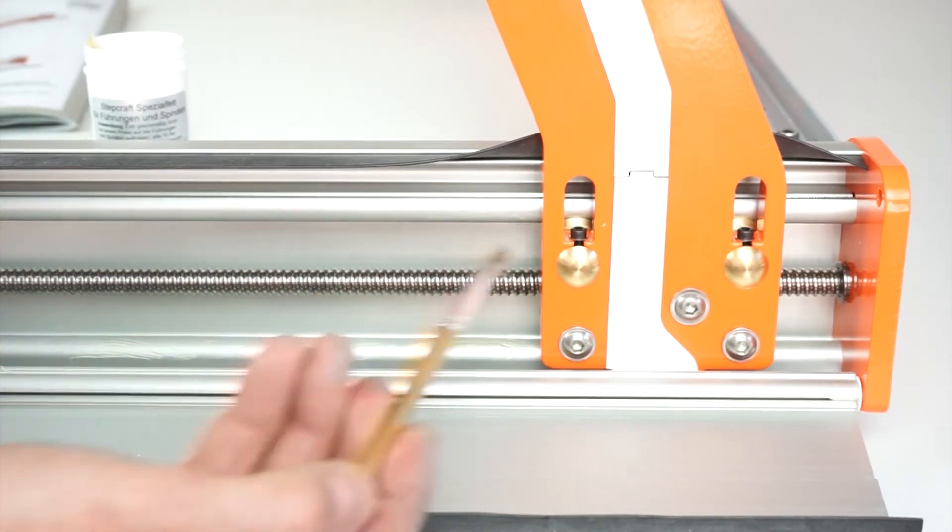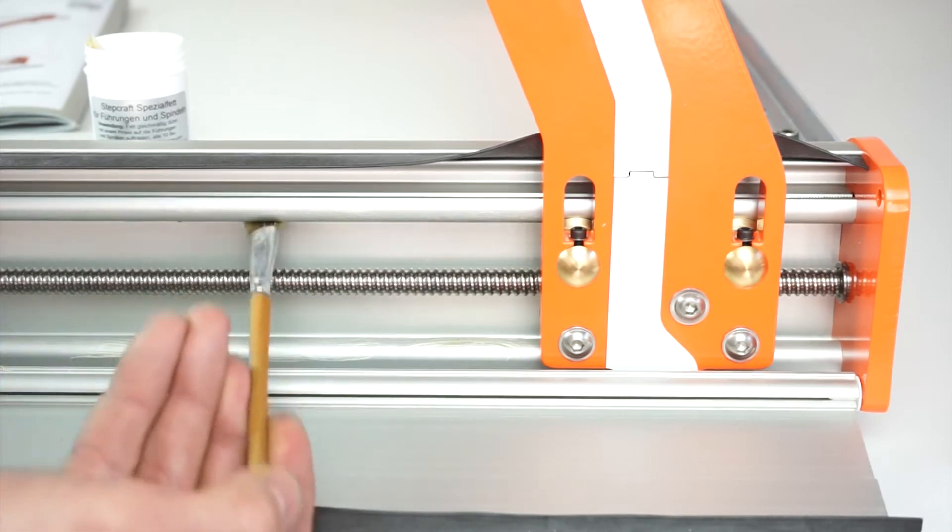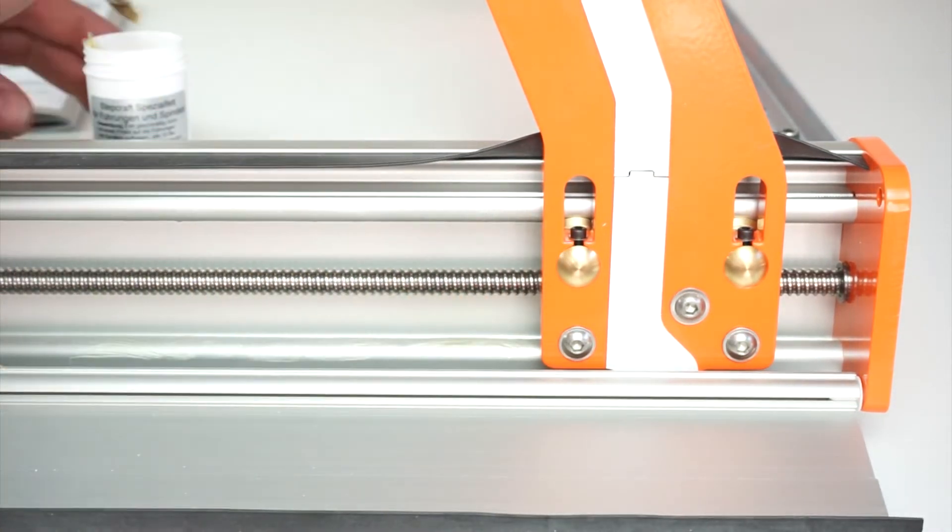Use a small brush to apply a thin layer of grease on the lead screws and on the roller track. Don't forget to apply grease to the top track.